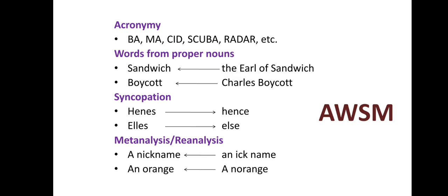The next one is Meta-analysis, which is also known as Re-analysis. In this process, the consonant at the end of one word becomes attached to the vowel at the beginning of the next word. For instance, 'a nickname' was originally 'an ickname,' and 'an orange' was originally 'a norange' (noranj).